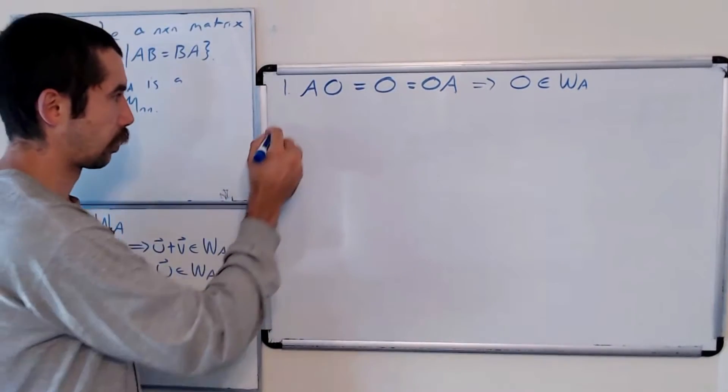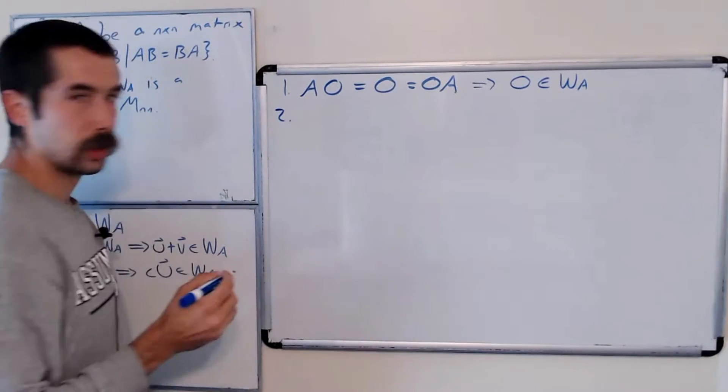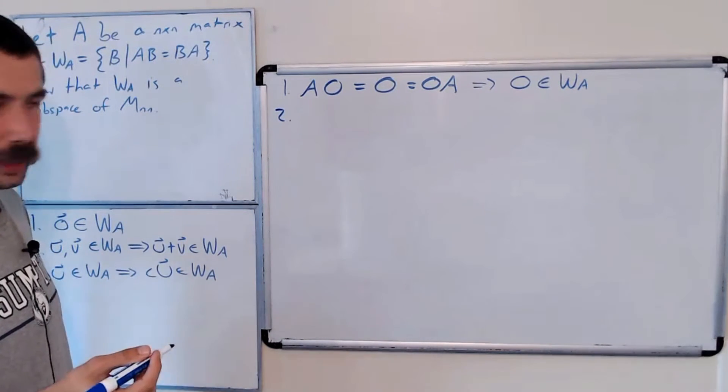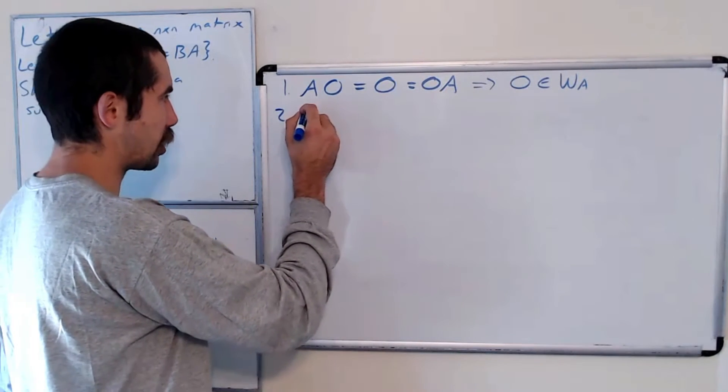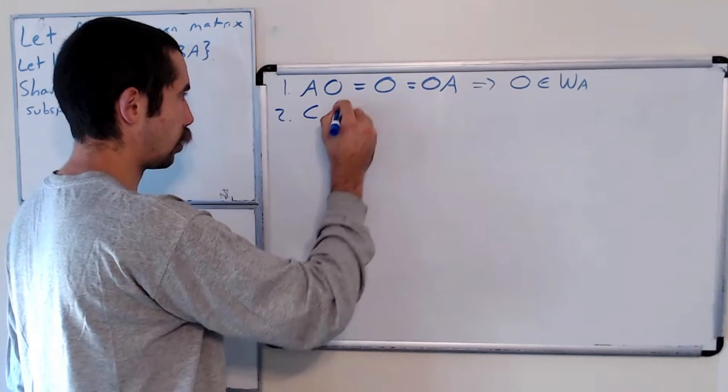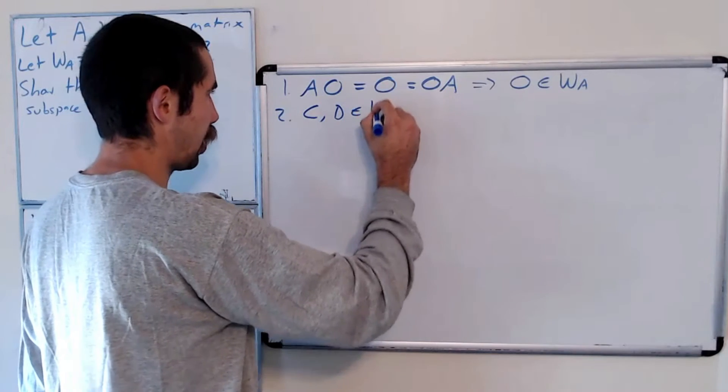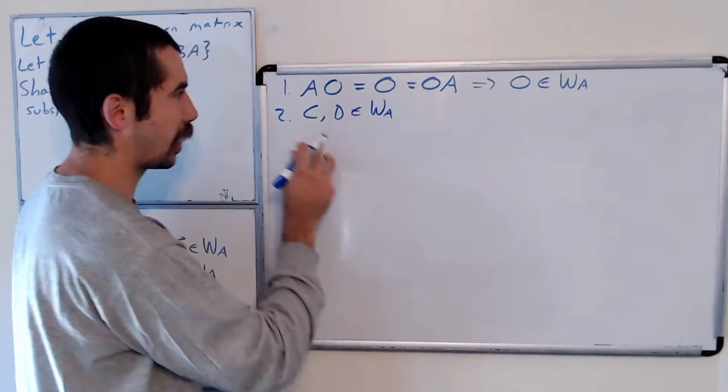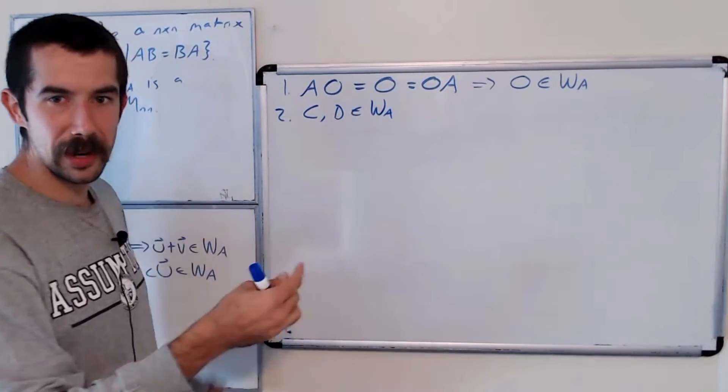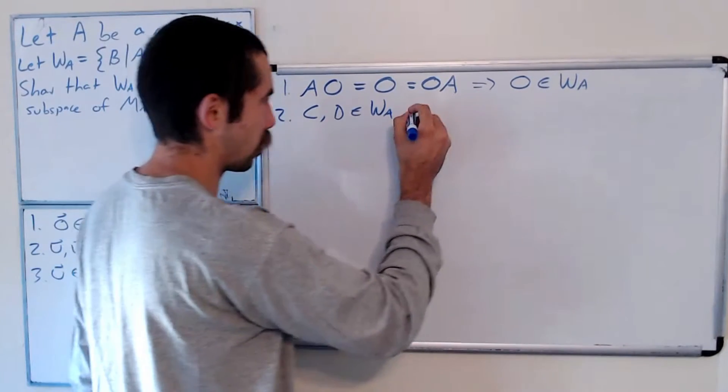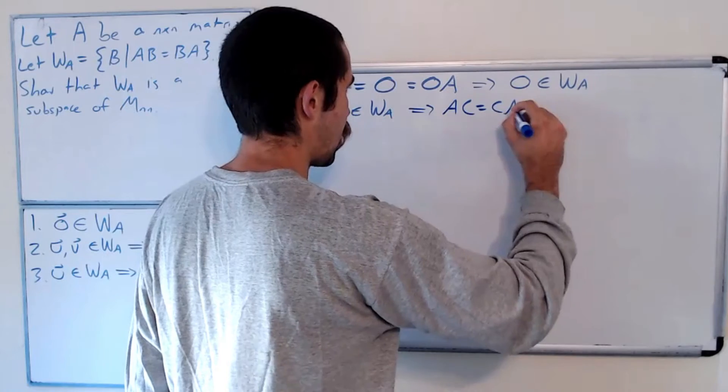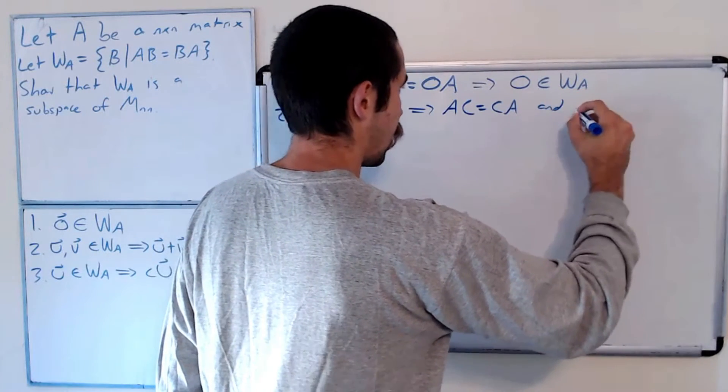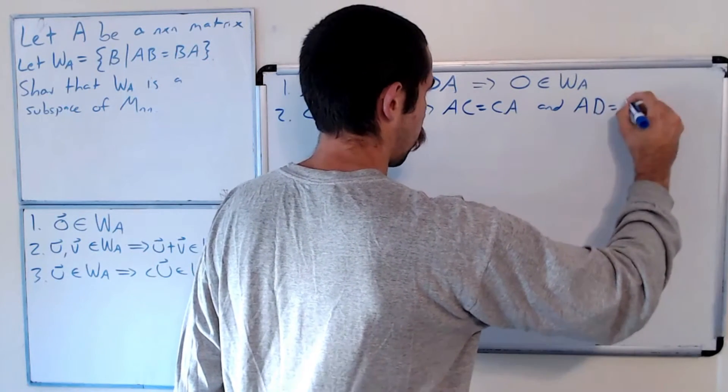That one wasn't too bad. Two. So let's suppose we have two matrices. We could call them, I guess let's call them C and D that are in W sub A. So what does this mean? If they're in W sub A, that means they commute with W sub A. So let's just write that down. So this implies AC equals CA and AD equals DA.